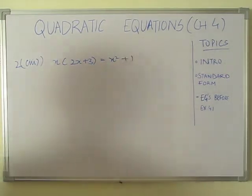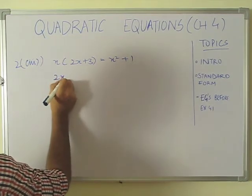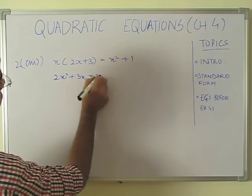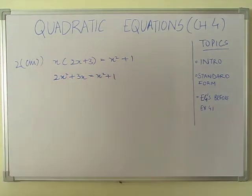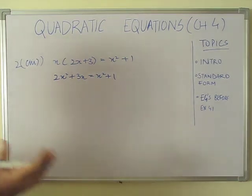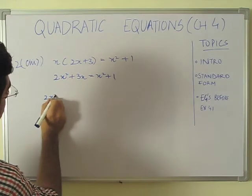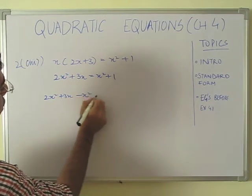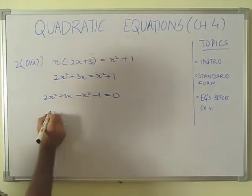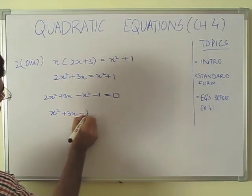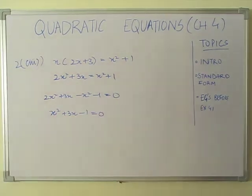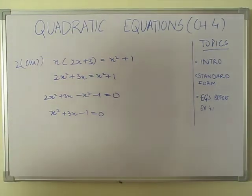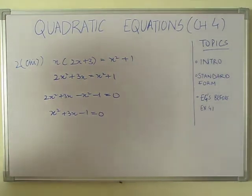The third example: 2x² plus 3x equals x² plus 1. I will bring everything to the left-hand side. This becomes 2x² plus 3x minus x² minus 1 equals 0, which simplifies to x² plus 3x minus 1 equals 0. Checking the three rules: the coefficient of x² is 1, which is not 0; b and c can be any value; and there is no power greater than x². So this is a quadratic equation.